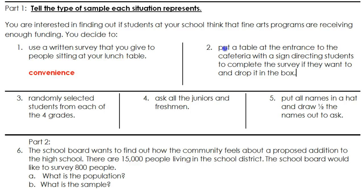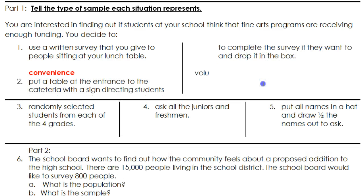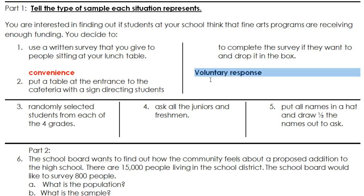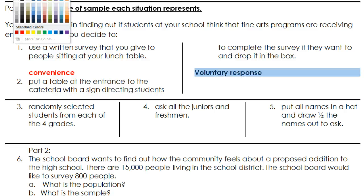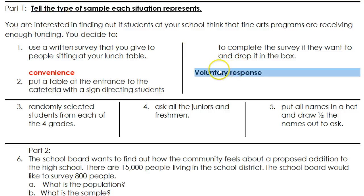Number two: put a table at the entrance of the cafeteria with a sign directing students to complete the survey if they want to and drop it in the box. This is going to be voluntary response, because people can choose to do the survey or not — we're leaving it entirely up to them.